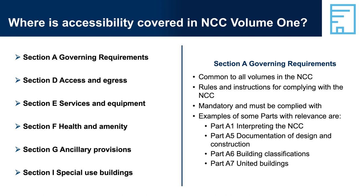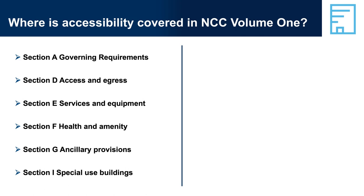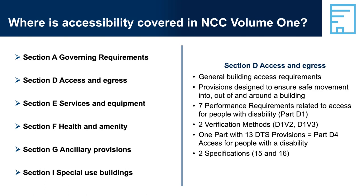The four main sections of NCC Volume 1 containing performance requirements primarily related to accessibility are: Section D, Access and Egress, which focuses on how people enter, leave and move around a building. This has implications for the ease with which people with disability can access and move around the building and how they can evacuate in an emergency. Section D has seven performance requirements relevant to access for people with disability, two relevant verification methods, Part D4 containing DTS provisions, and two relevant specifications — Braille and Tactile Signs, and Accessible Water Entry for Swimming Pools.